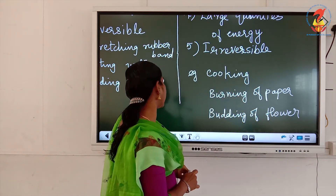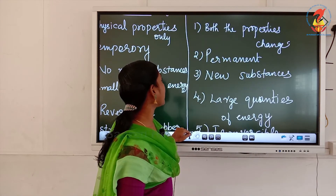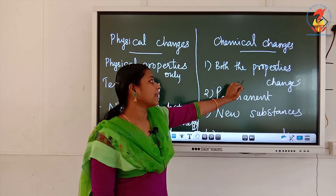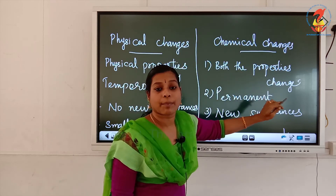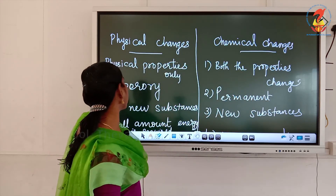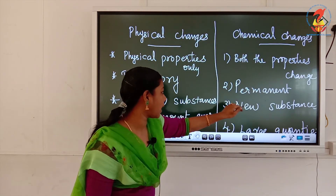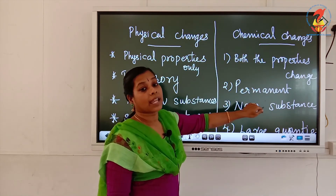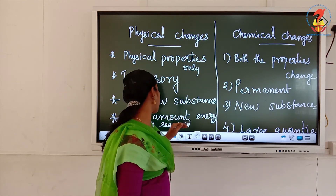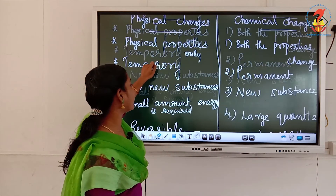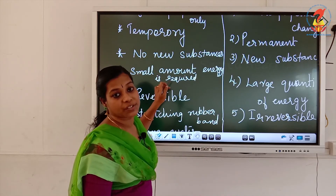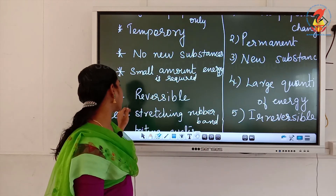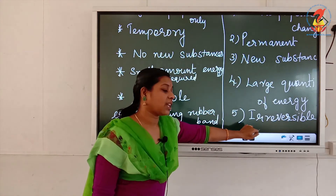Once again, the key points: during a physical change, only physical properties change; in a chemical change, both physical and chemical properties change together. Physical change is temporary, chemical change is permanent. During physical change, no new substances are produced; in chemical change, new substances are produced. A small amount of energy is required for physical change; a large amount for chemical change. Physical change is reversible; chemical change is irreversible.